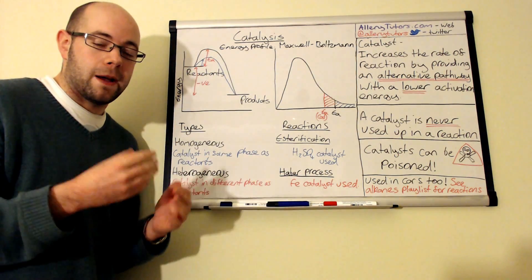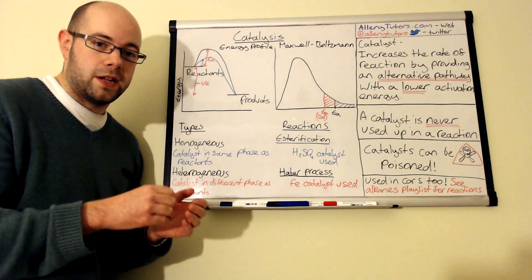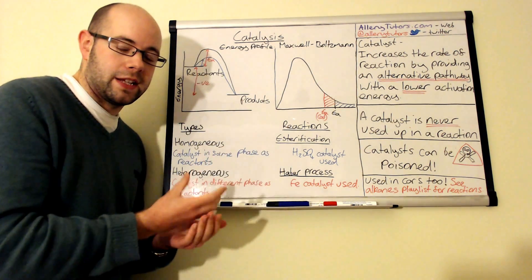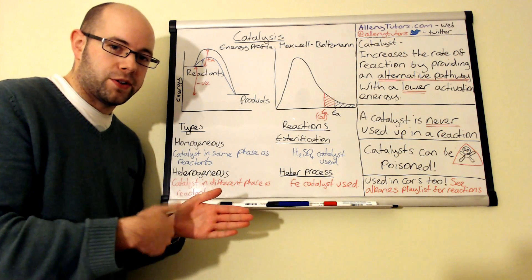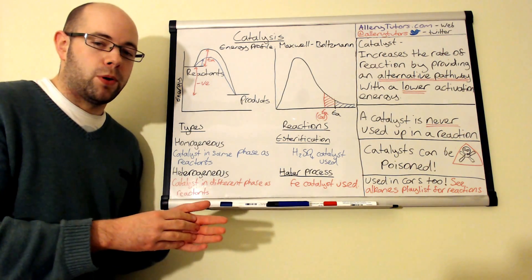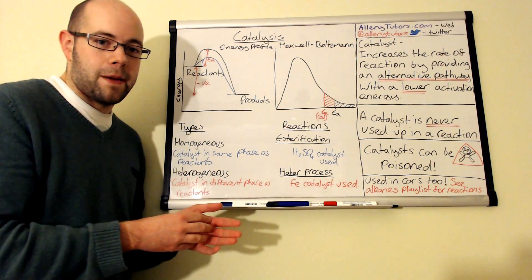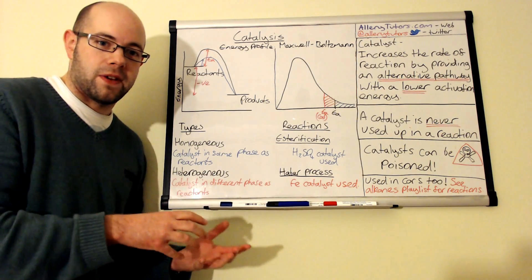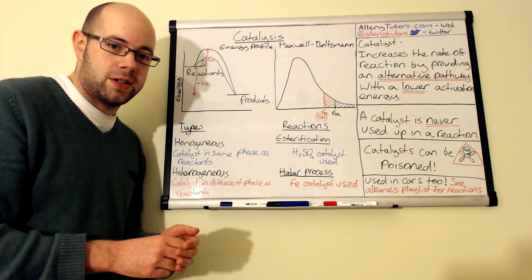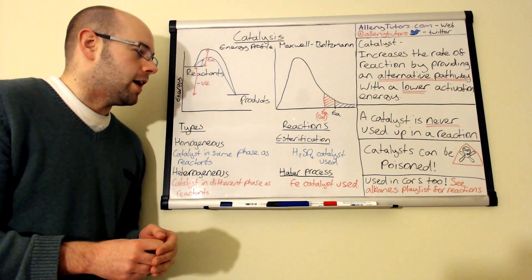The problem is that sometimes you can get impurities that block up the mesh, particularly things like zeolites where they've got a very fine honeycomb structure. Some of the pores can get blocked, and if they're blocked it means your catalyst isn't as effective. We describe that as poisoning, or catalyst poisoning. That can be a disadvantage of certain catalysts such as zeolites and heterogeneous catalysts as well.